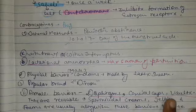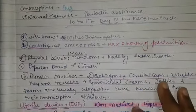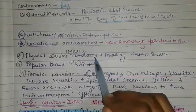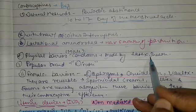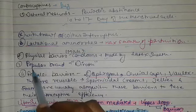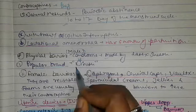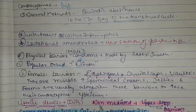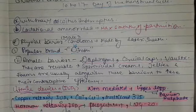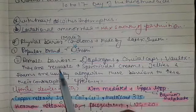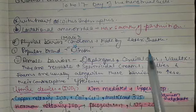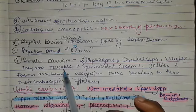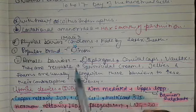Lactational amenorrhea is effective for only 6 months. Physical barriers include condoms — as mentioned in NCERT, the brand name is Nirod. Female barriers include diaphragm and cervical caps. These are reversible and reusable methods of contraception.